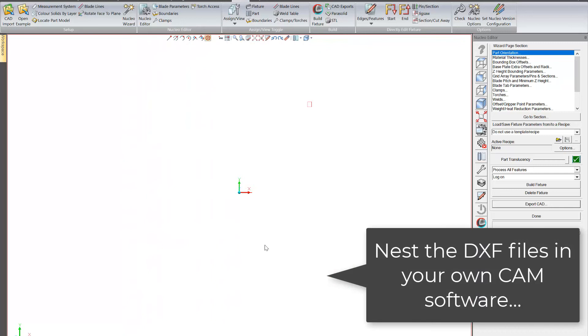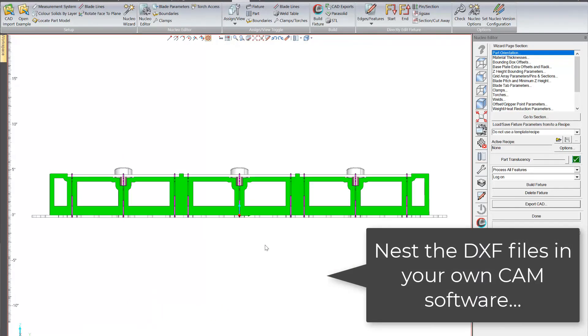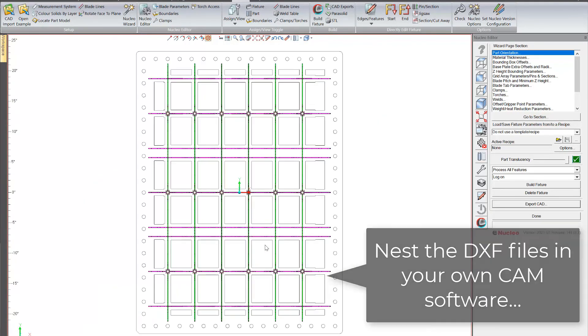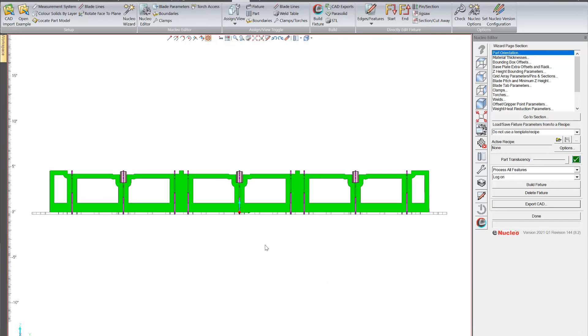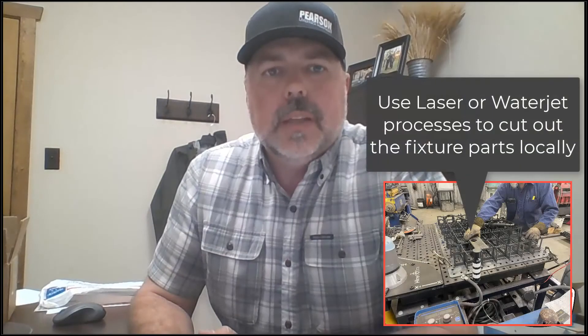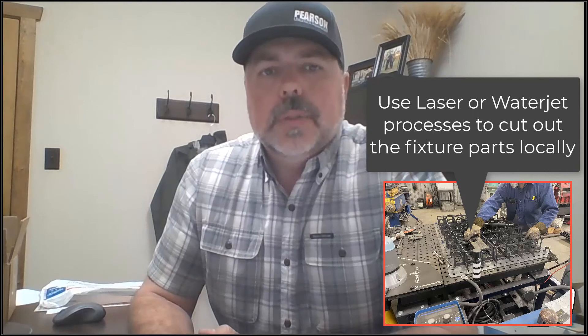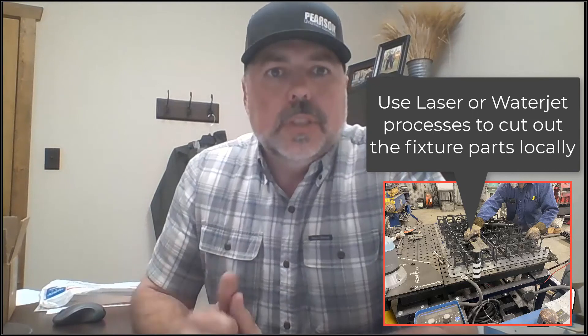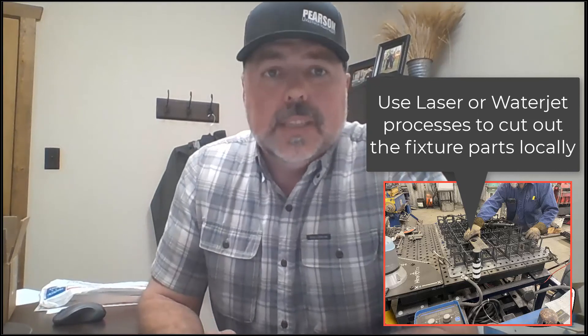A day or two after that, I had all of the parts, the DXF drawings for files for all of the components of the jig. And then within an hour or so, we had the jig put together here and we're able to start programming the robot to the jig. So that was the process to getting it done.